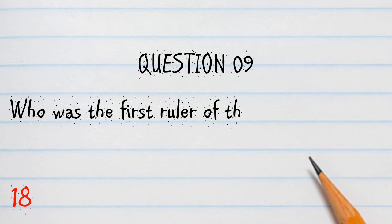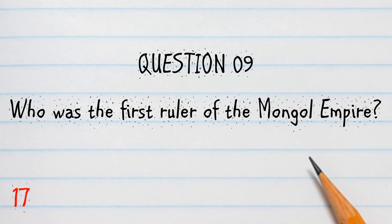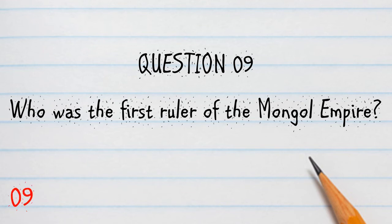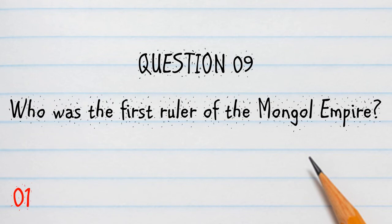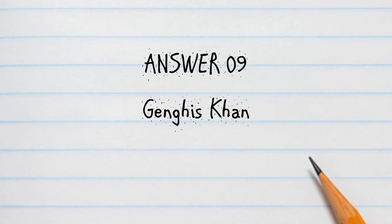Question 9. Who was the first ruler of the Mongol Empire? Answer 9: Genghis Khan.